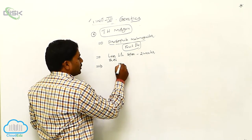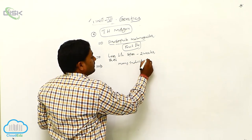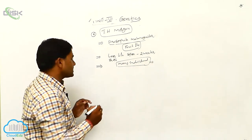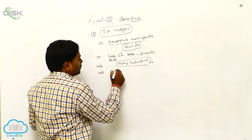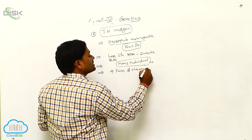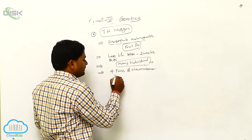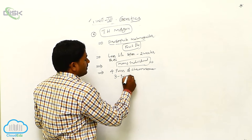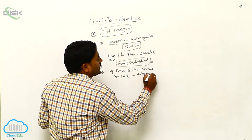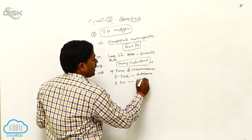In a single breeding, it can produce many individuals. It has a very small number of chromosomes — only 4 pairs of chromosomes. Of these 4 pairs, 3 pairs are autosomes and one pair is allosomes.